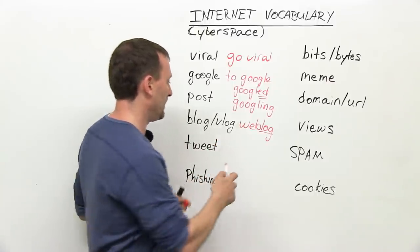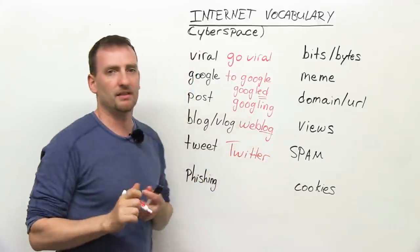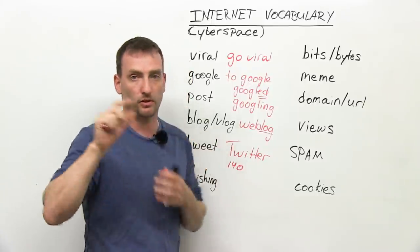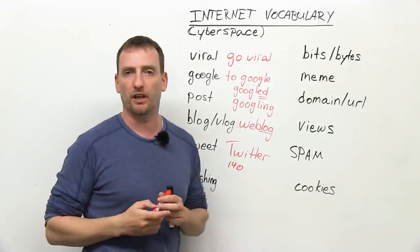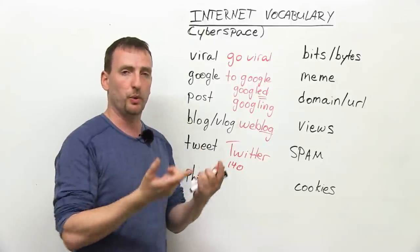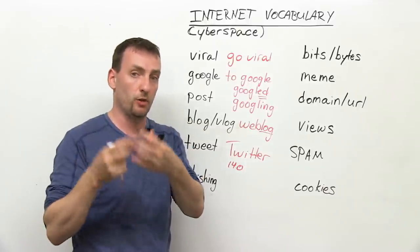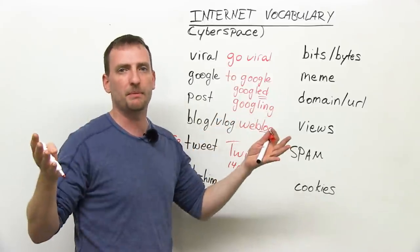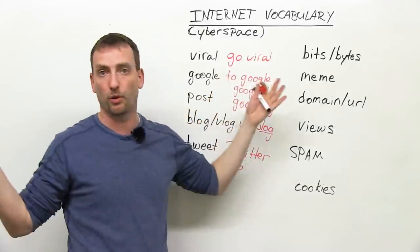A tweet comes from the company Twitter. A tweet is a short message, 140 characters or less — so letters, spaces, dashes, etc. It's something that you share with whoever follows you on Twitter. You tweet this. Sometimes people will retweet — they will take your tweet, your message, and send it out to more people. So hopefully, if many people see your tweet, maybe it will go viral and the whole world will see it.